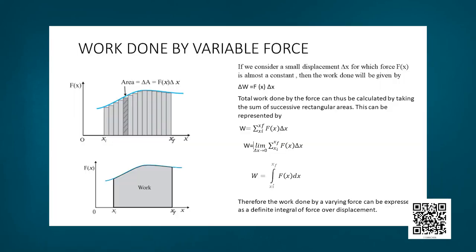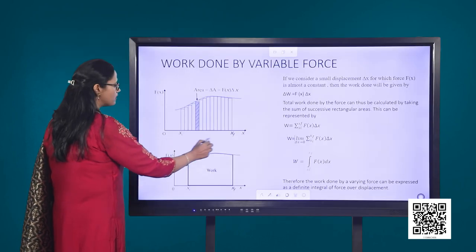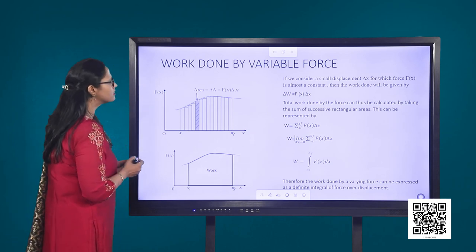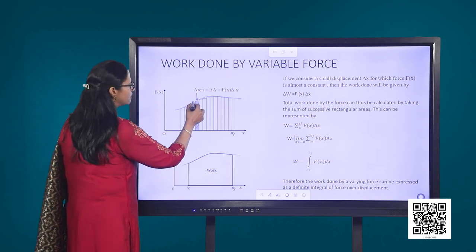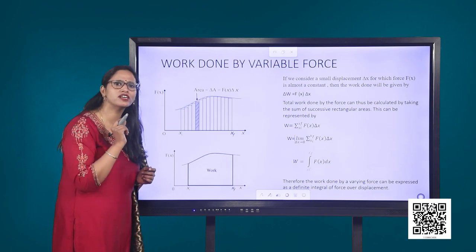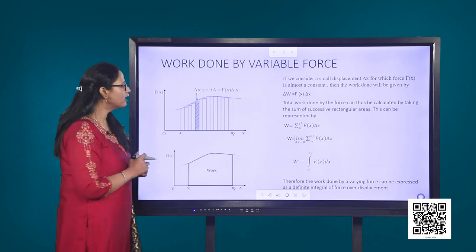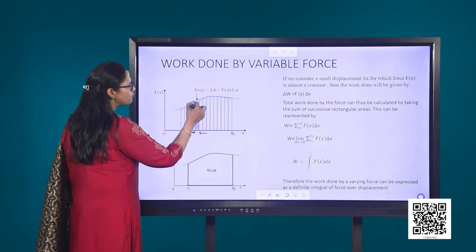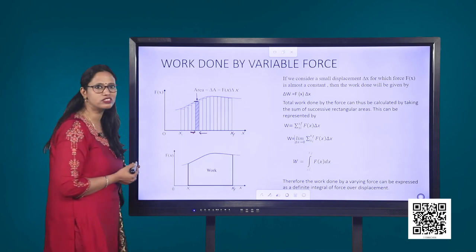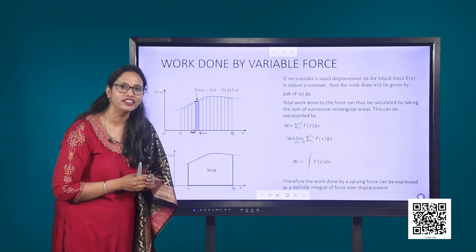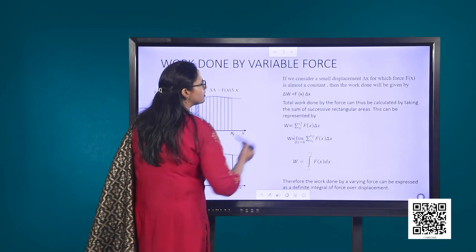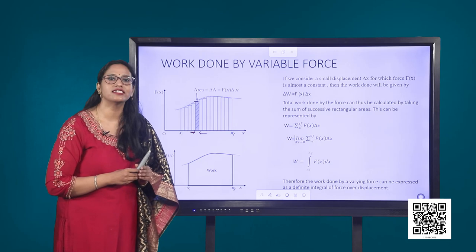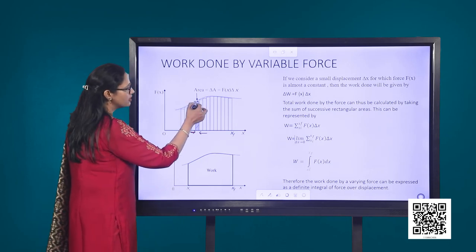This graph shows a variable force Fx, with displacement along the x-axis and force along the y-axis. If we consider a small displacement delta x, for which the force Fx could be almost considered to be constant, then the small amount of work done can be found by multiplying the force with delta x. This Fx delta x represents the area of the rectangle shown shaded.